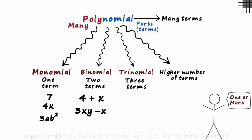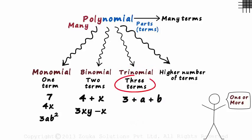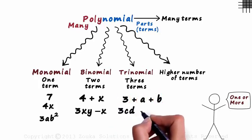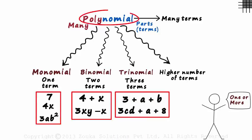An example of a trinomial would be three plus a plus b. It has three terms. One, two and three. Or maybe three cd plus a plus eight. Again, let me remind you, all these examples you have seen are polynomials.